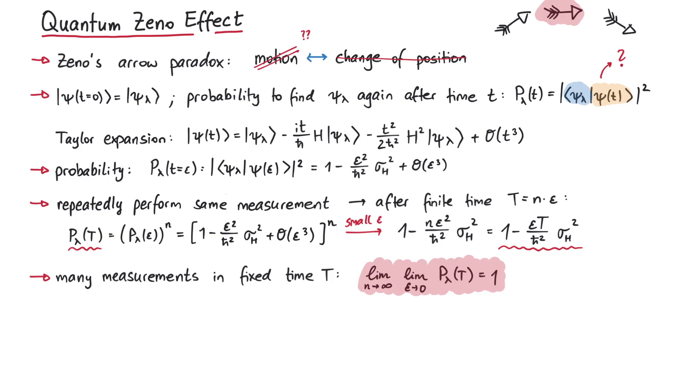This means we can keep the system in the initial state psi lambda for any finite time we choose, as long as we perform enough measurements. Just like the arrow that wasn't able to move since we looked at it at some instant in time, our quantum system also cannot evolve since we are constantly looking at it by performing measurements.